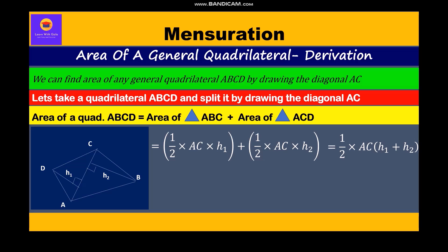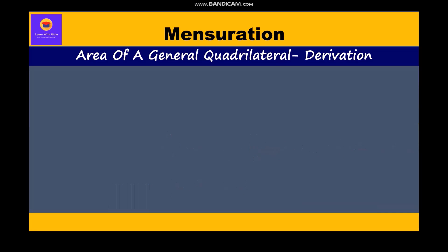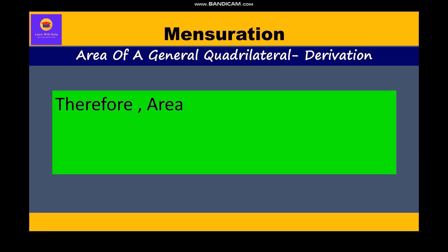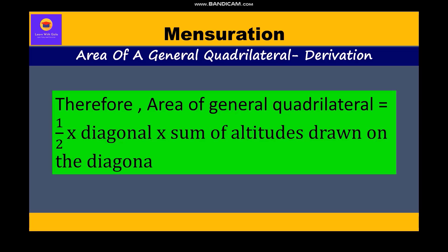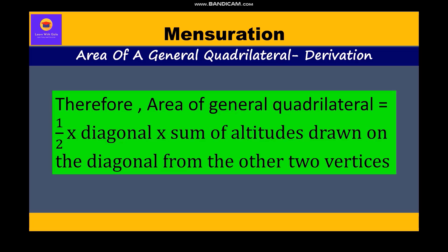Further, we will write this as half into D in bracket H1 plus H2, where D denotes the length of diagonal AC. Therefore, the area of a general quadrilateral is equal to half into diagonal into the sum of altitudes drawn on the diagonal from the other two vertices. This is how we have derived the formula.